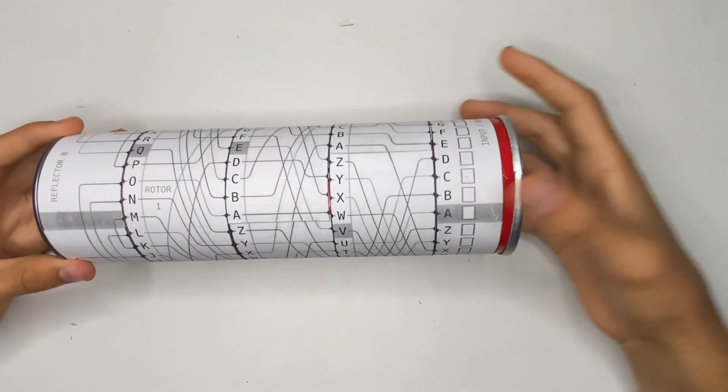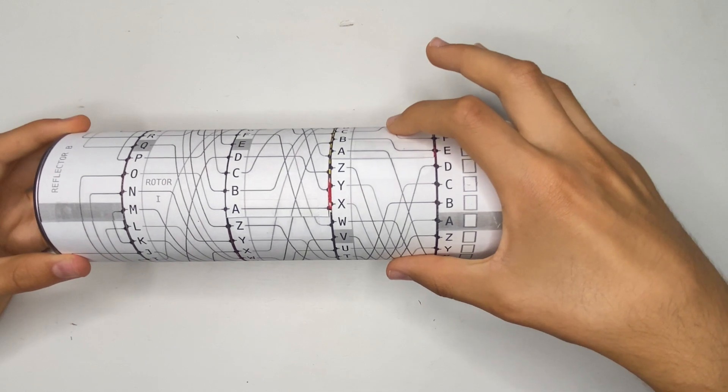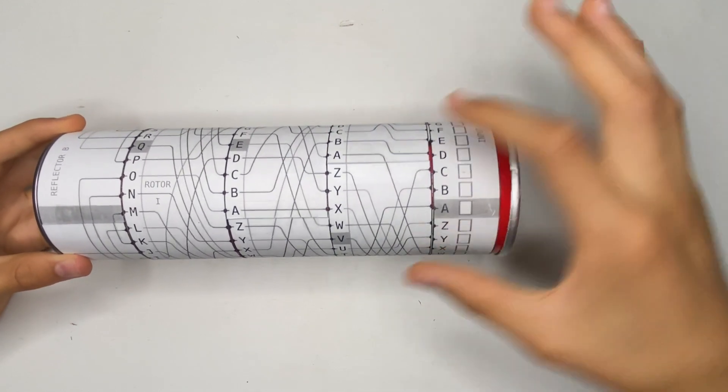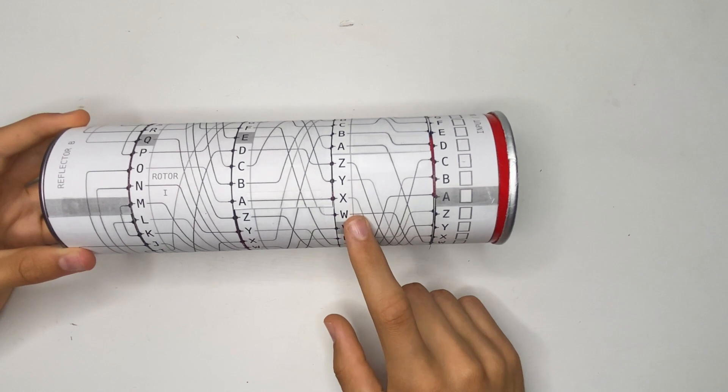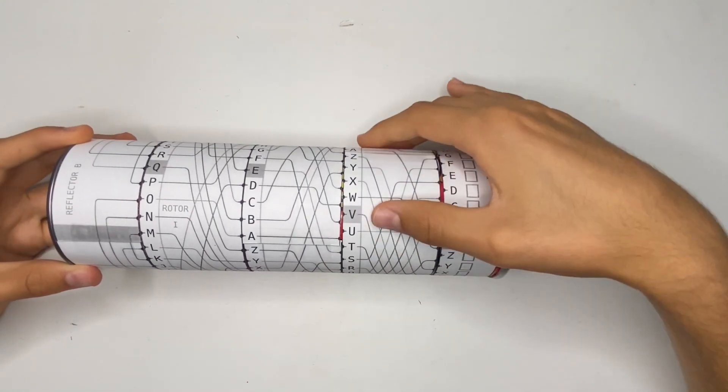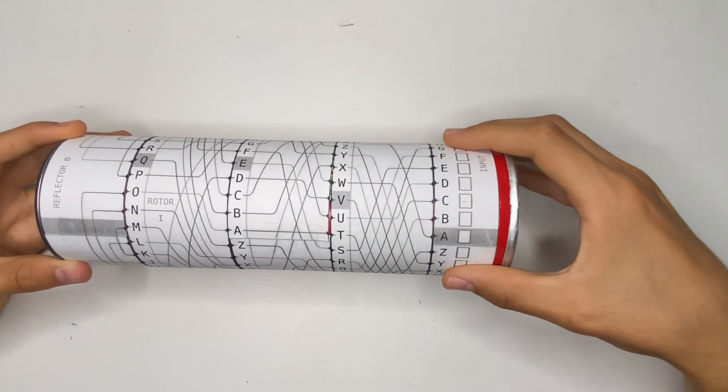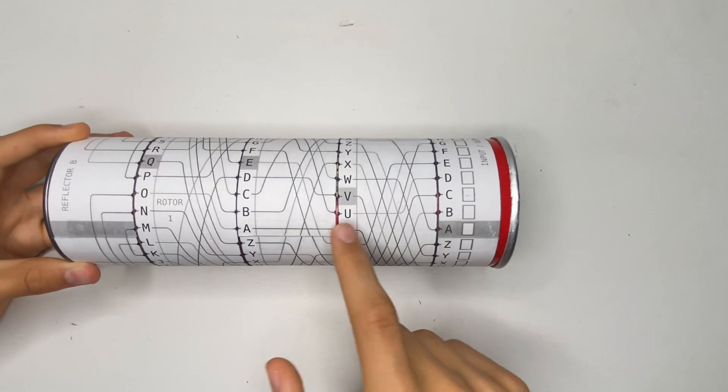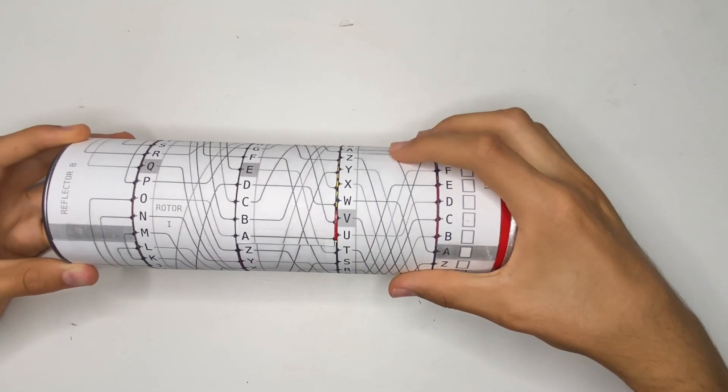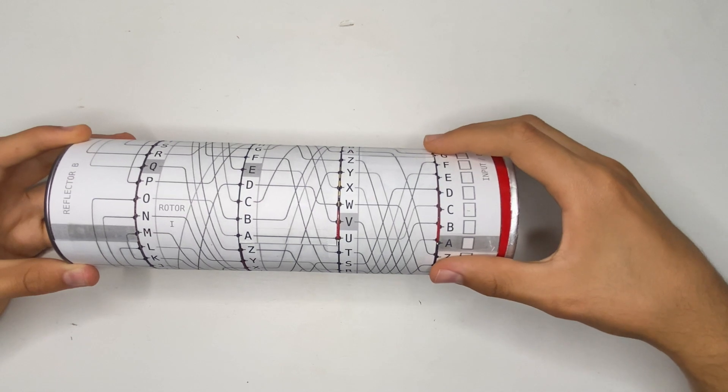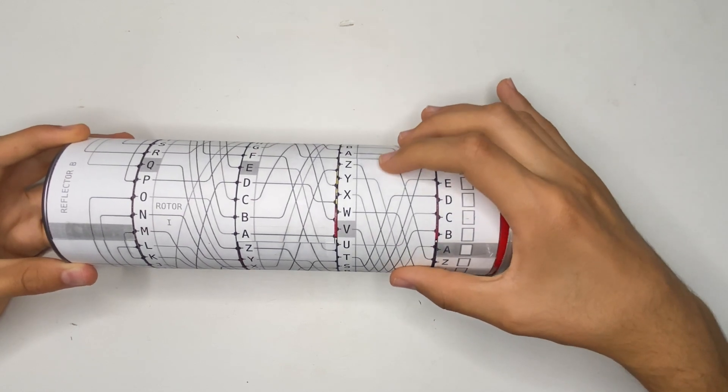And once you've encrypted your first letter, you're going to want to tick this down by one, this rotor here. And so when this, so you can see here, when our gray, when it ticks, so each letter we encrypt, we move this rotor by one.